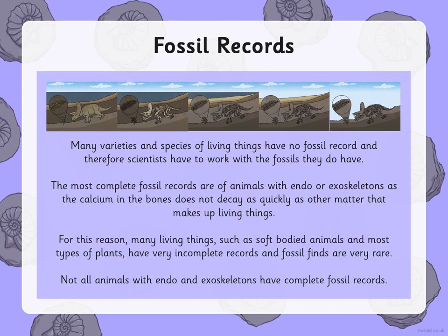Endoskeletons are skeletons inside the body and exoskeletons are those outside the body — thinking about bugs and things that have a hard shell. The most complete fossil records are of animals with endo- or exoskeletons, as the calcium in the bones does not decay as quickly. For this reason, many living things such as soft-bodied animals and most types of plants have very incomplete records and fossil finds are very rare.